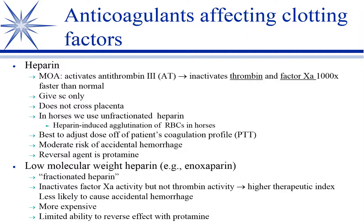Heparin does carry some risk of accidental hemorrhage and is harder to regulate than enoxaparin. There are standard doses out there, including a mini-dose. The best way is to get a baseline PT or PTT — heparin is interfering with those — and from that baseline, adjust your heparin dose until the PT is about one and a half to two times baseline. That should put you in the range of appropriate anticoagulation with minimal risk of accidental hemorrhage.